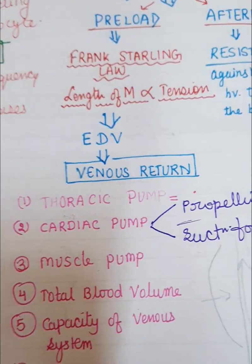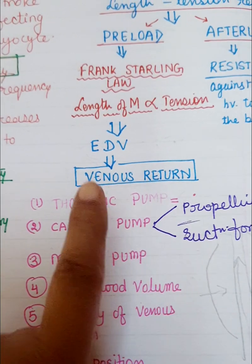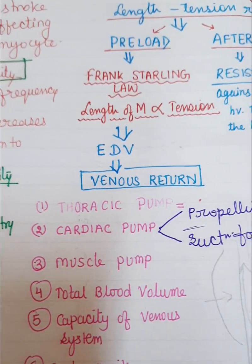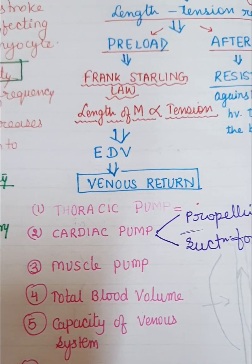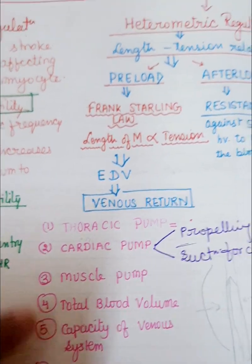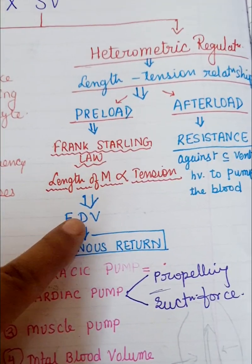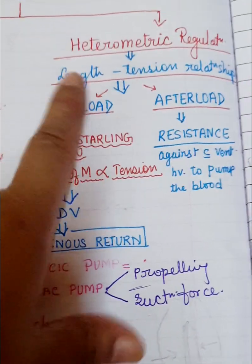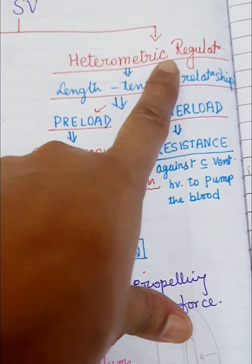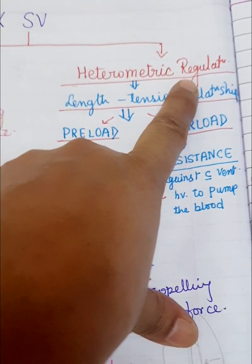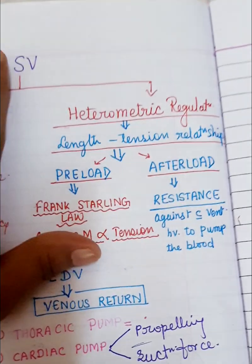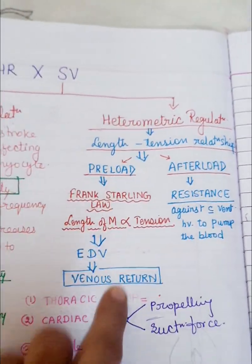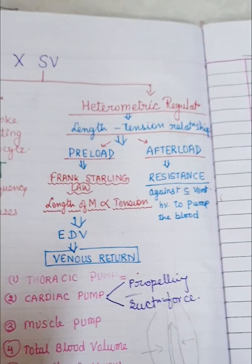Ventricular compliance also affects venous return. These are the factors which affect venous return, and thereby end-diastolic volume, and thereby the length of the myocardium, and thereby the force of contraction of the myocardium, and thereby the stroke volume. So these are the factors which affect stroke volume.